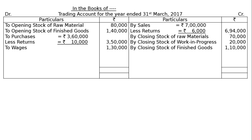Next is to wages Rs. 1,30,000, then to factory expenses Rs. 90,000, then to freight inward Rs. 20,000.